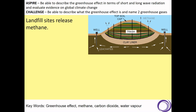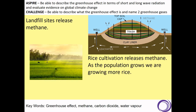Landfill actually releases methane, and landfill is how the majority of our household waste is disposed of. That's another reason why we should be recycling as much as possible to reduce the amount of landfill we are making. The process of growing rice also releases methane, and as the population of the planet increases we are growing more rice to feed those people, which means we are increasing the amount of methane in the atmosphere. It's also the same for cows — the more cattle we are farming, the higher amounts of methane are being released into the atmosphere.